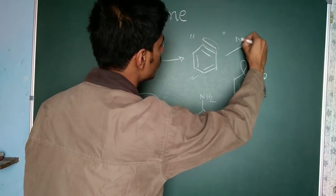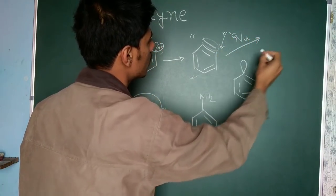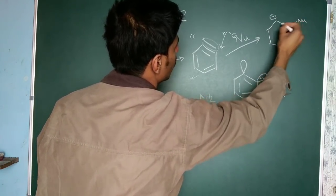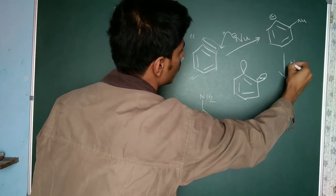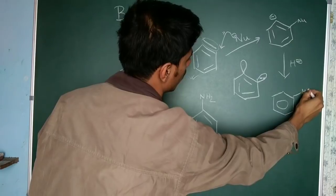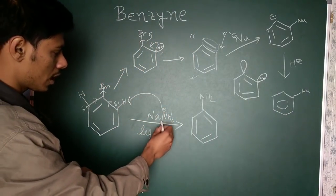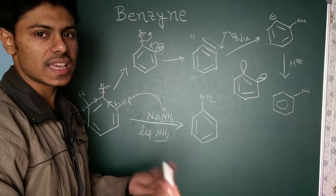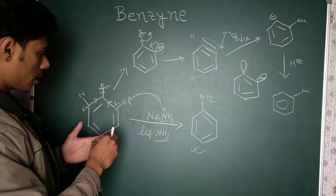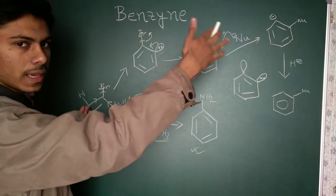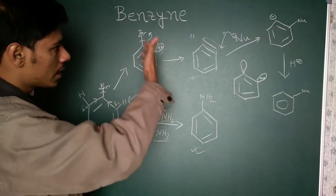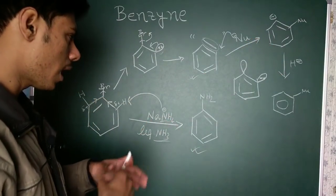Any nucleophile in the reaction medium will attack the benzyne intermediate. After nucleophilic attack, the resulting anion is protonated by any proton source to give the substituted product. In this case, ammonia or another equivalent of NH2 minus acts as the nucleophile, attacking benzyne to give aniline. At first sight, one might think amide attacks directly, but the reaction actually proceeds through this longer benzyne pathway.